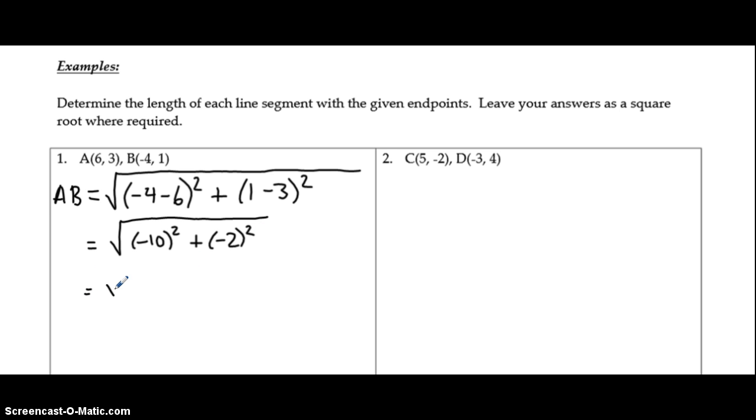Because we're always squaring these numbers, we're always going to end up with positives here at the end. So negative 10 times negative 10 is positive 100. Negative 2 times negative 2 is positive 4.